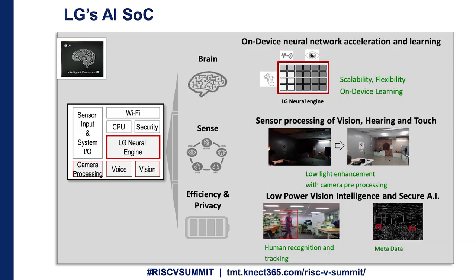LNE was first integrated into the LG AI SoC, which is the first AI SoC from LG, mainly for consumer electronics. Apart from LNE, it includes Wi-Fi, CPU, security, camera vision processing engines, and a sensor subsystem. It was mainly used for neural network acceleration and learning. As shown in the diagram, sensors are used to enhance camera processing for low-light enhancement and to detect human recognition and tracking.